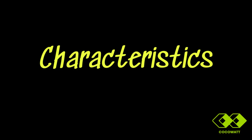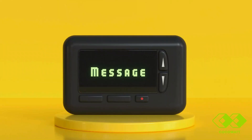Characteristics of an embedded system: Single-functioned — an embedded system usually performs a specialized operation and does the same repeatedly. For example, a pager always functions as a pager.